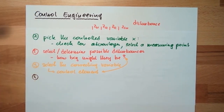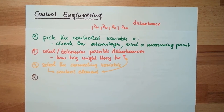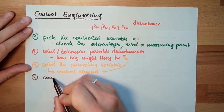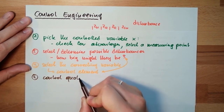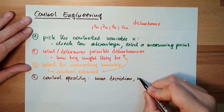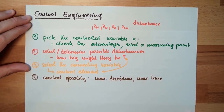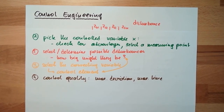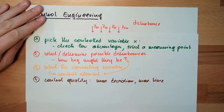Now we're talking about control quality — that's the fourth point. I need to know what quality means here: what is the possible maximum deviation, and how long do I have to bring the control variable and the reference variable together? I need to define maximum deviation and maximum time for reacting. If I set everything to zero, it becomes expensive — so there are tradeoffs to consider.